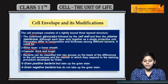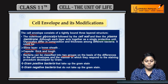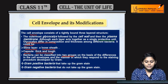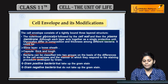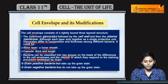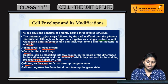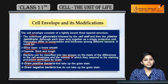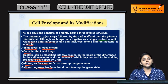Bacteria can also be classified into two groups depending upon how the cell envelope observes or absorbs stain. This was developed by Gram. He categorized bacteria into gram positive bacteria and gram negative bacteria.